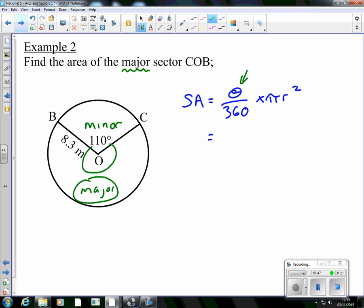Now, 110 is the minor, so the major is going to be 360 subtract 110, because we want to know what's left in our circle, so that's going to be 250. So our working becomes 250, over 360,